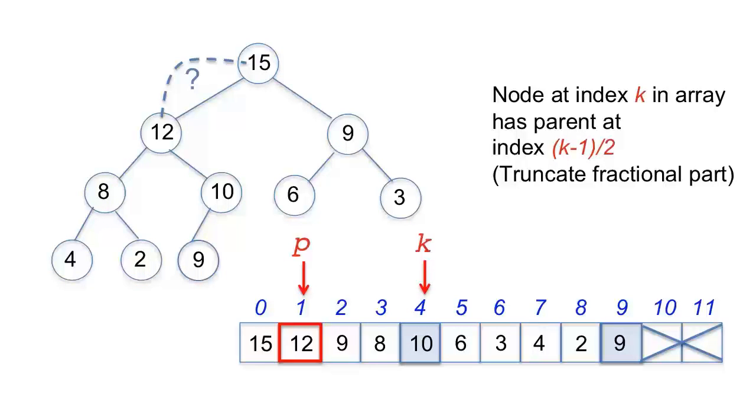Once again, sift-up moves up a level in the heap, and in the array, k moves up to take over from p, and p is recomputed. When 12 is compared to 15 and found to be not greater, the sift-up process comes to an end.